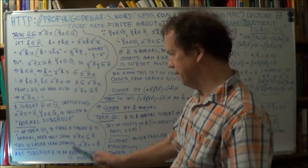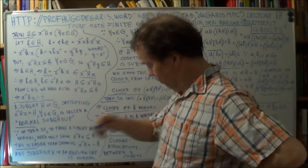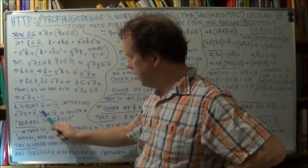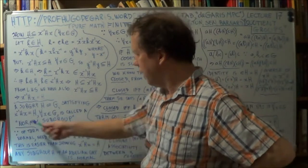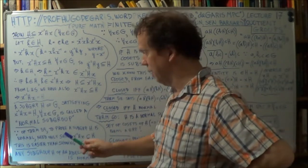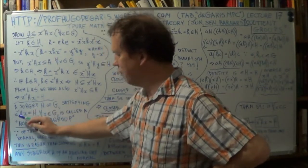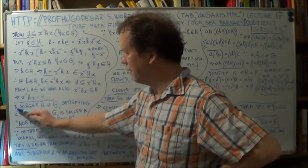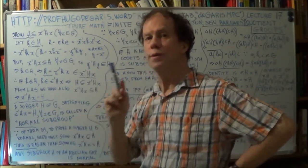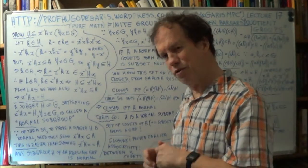Now, if X inverse · big H · X equals H, where H is some subgroup of your group G, and if that's true for any X — any member of your group — then that subgroup H is given a label: it's called a normal subgroup. That's the definition of a normal subgroup — the condition X inverse HX equals H is satisfied. Not quite sure why it was labelled 'normal' in the first place; it seems rather special than normal.